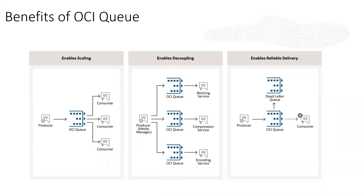In this slide, we are going to talk about benefits of OCI queue service. OCI queue service, or OQS, is a fully managed serverless, high throughput, highly available queuing service capable of ingesting millions of messages per second, and it eliminates the overhead of managing message-oriented middleware.